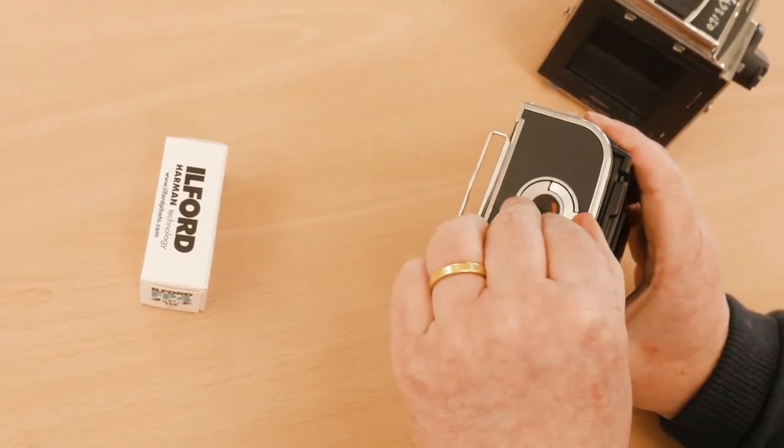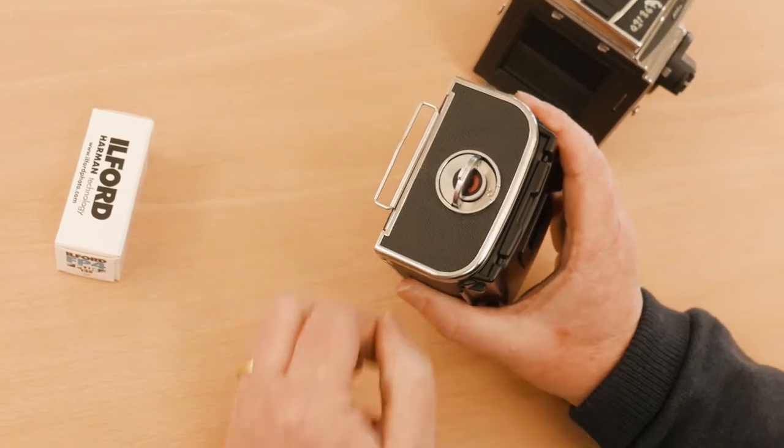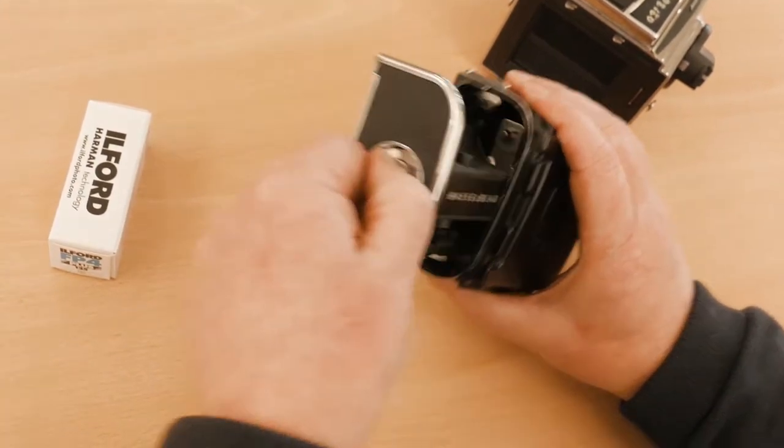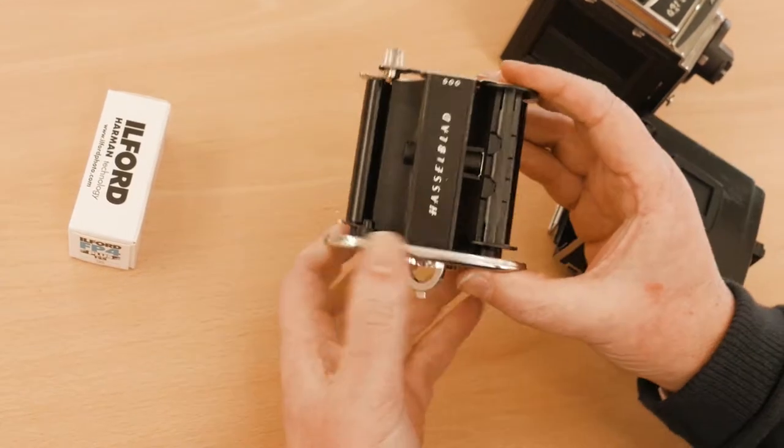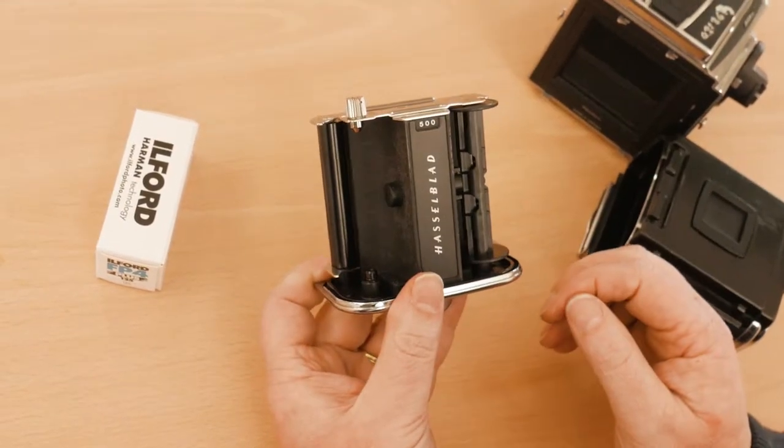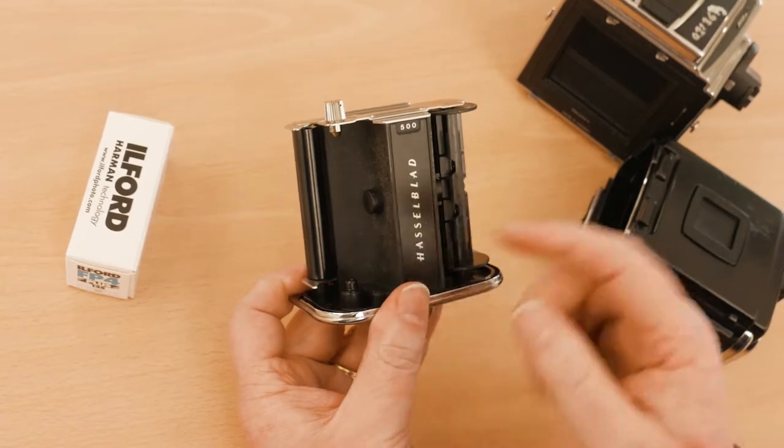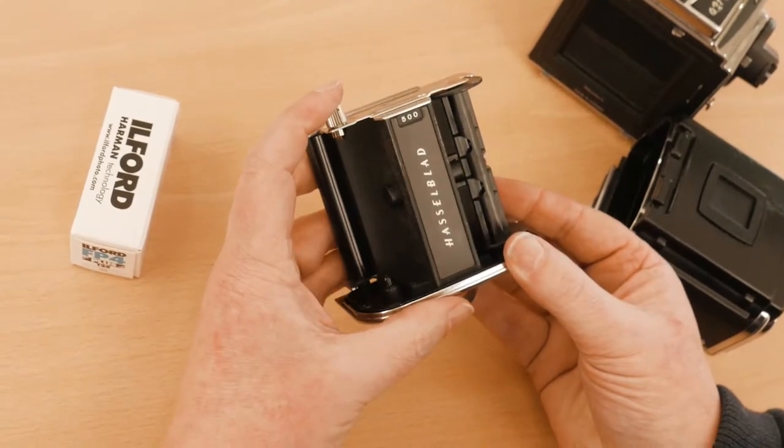I'm going to lift this flap and take the film carriage out of the film back. You'll find the empty spool is on the wrong side and I need to move that across to the other side and I do this this way.